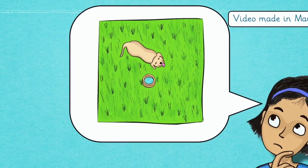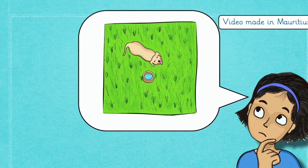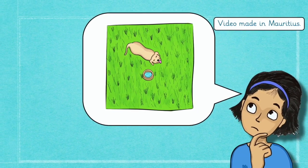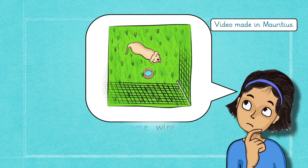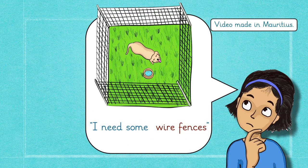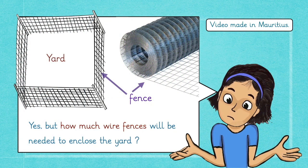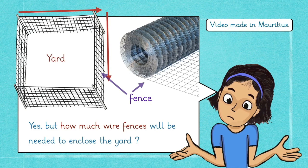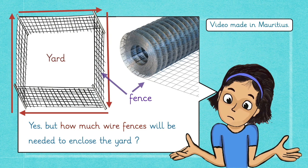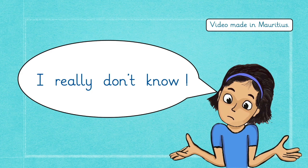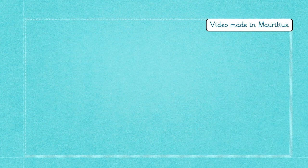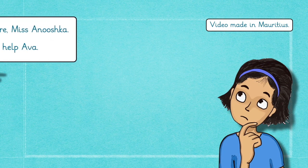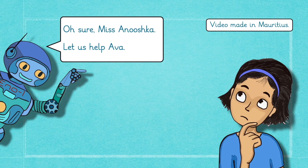Oh, poor Ava. Her dog is wandering everywhere, even disturbing the neighborhood around. How can we help her? Ah, I guess she has to fence her garden. Yes, but how much wire fences will be needed to enclose the yard? I really don't know. Oh, sure, Miss Anoushka. Let us help Ava.